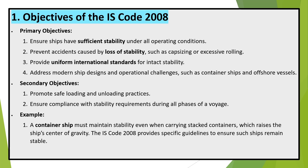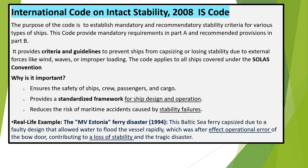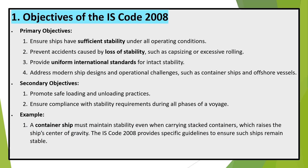Objectives of the IS Code 2008. Primary objectives: First, ensure ships have sufficient stability under all operating conditions. Second, prevent accidents caused by loss of stability, such as capsizing or excessive rolling. Third, provide uniform international standards for intact stability. Fourth, address modern ship designs and operational challenges, such as container ships and offshore vessels.